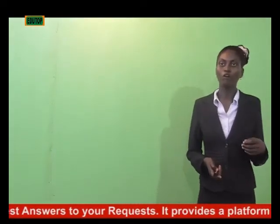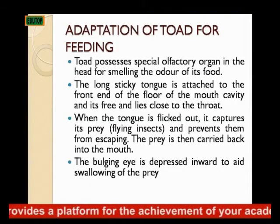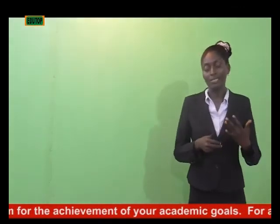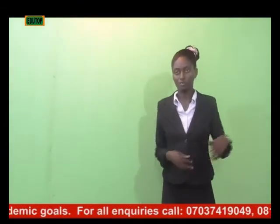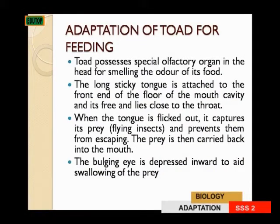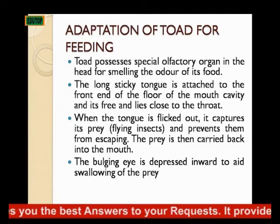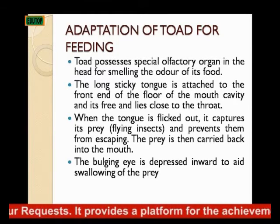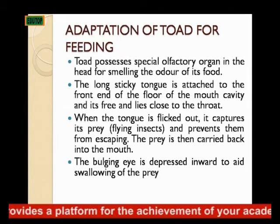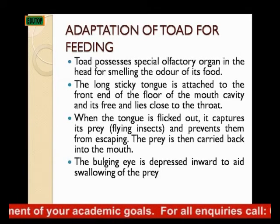The toad possesses a special olfactory organ in the head for smelling the odor of its food — that's the first step in searching for food, as it detects where the food is. It also has a long sticky tongue attached to the front of the mouth cavity and free near the throat. When the tongue is flicked out, it captures its prey, which is mainly flying insects, and also prevents the prey from escaping. The prey is then carried back into the mouth, and the bulging eyes of the toad are depressed inward to aid swallowing of the prey.